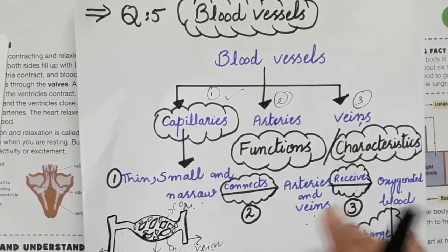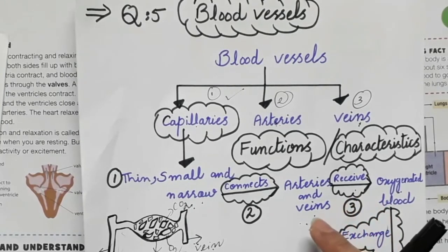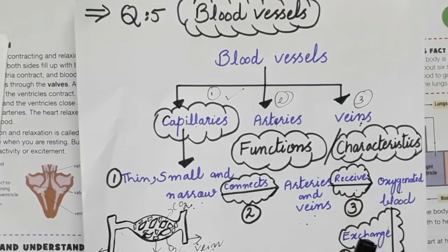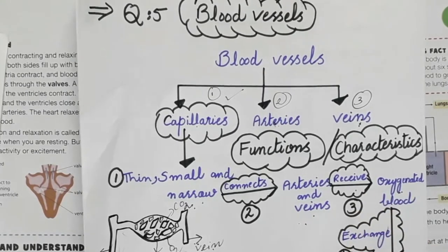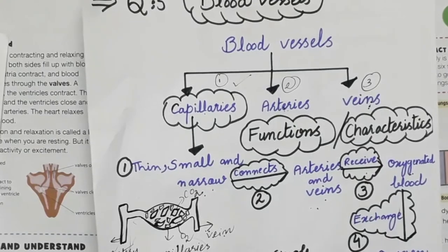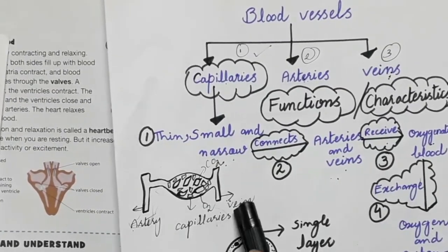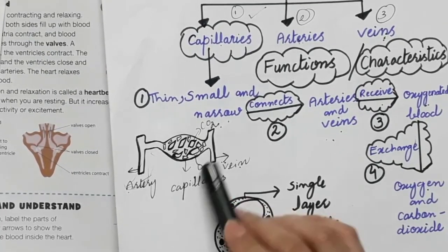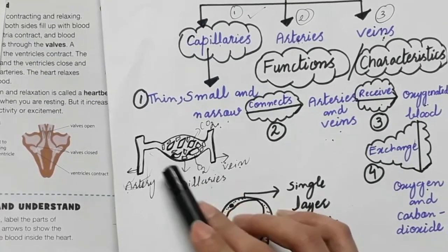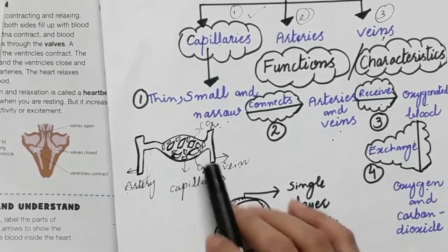Capillaries create a connection between arteries and veins. Arteries carry blood away from the heart, and veins carry blood back to the heart. In the diagram, you can see here is an artery, here is a vein, and in between them you can see capillaries. So capillaries, arteries, and veins are all present and the capillaries create the connection between them.